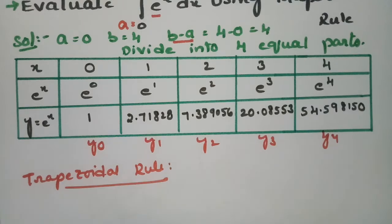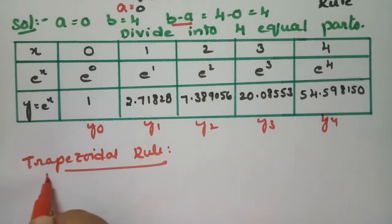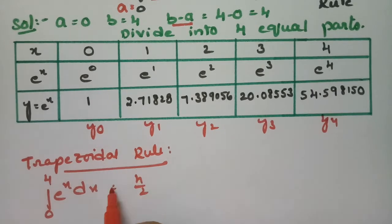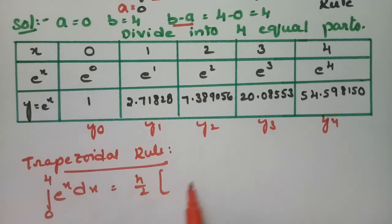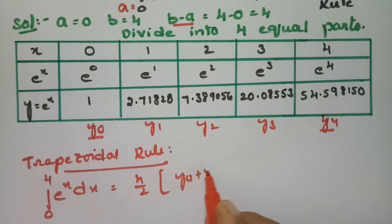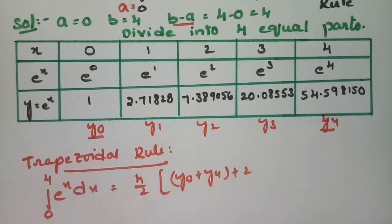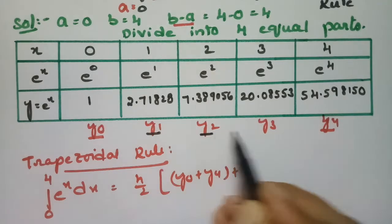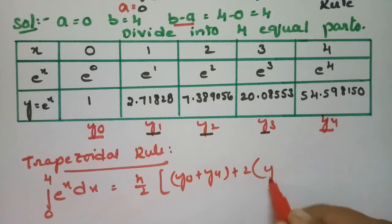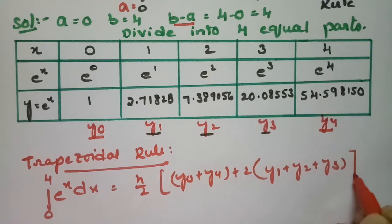According to the trapezoidal rule, the formula is: the integral from 0 to 4 of e^x dx equals h/2 times (y0 + y4) plus 2 times (y1 + y2 + y3).